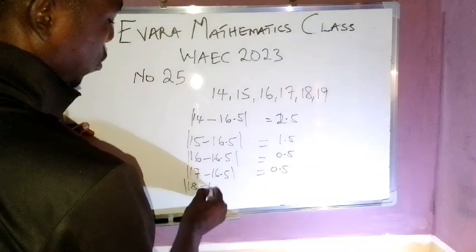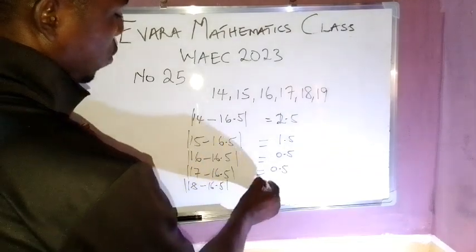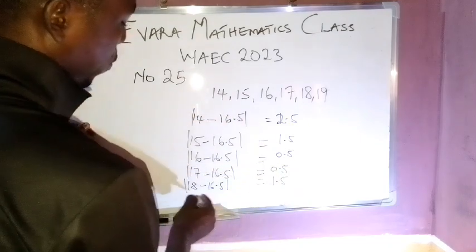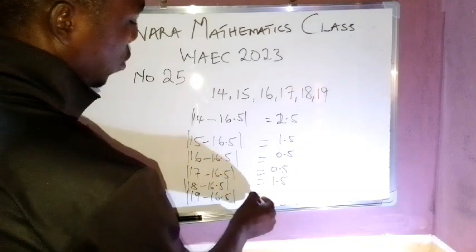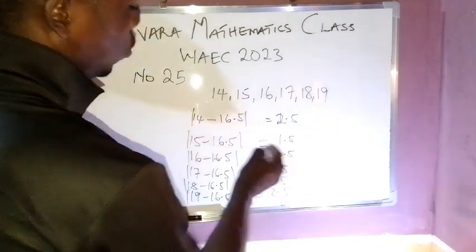18 minus 16.5 equals 1.5. And then 19 minus 16.5 equals 2.5.